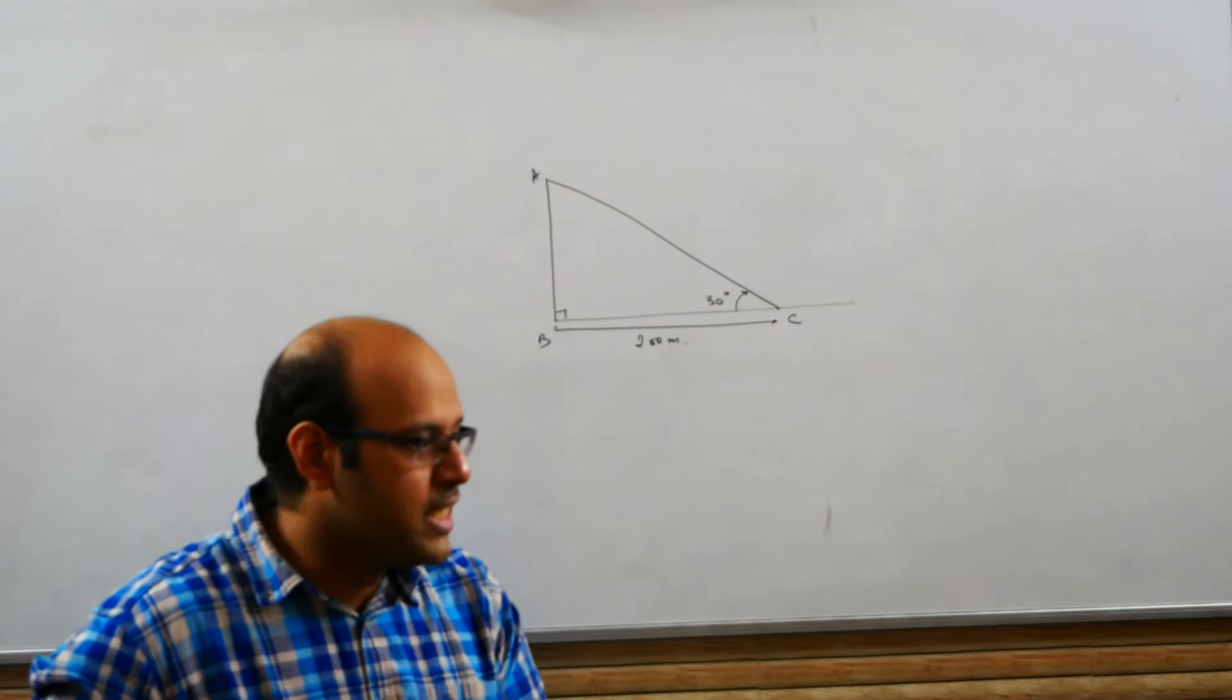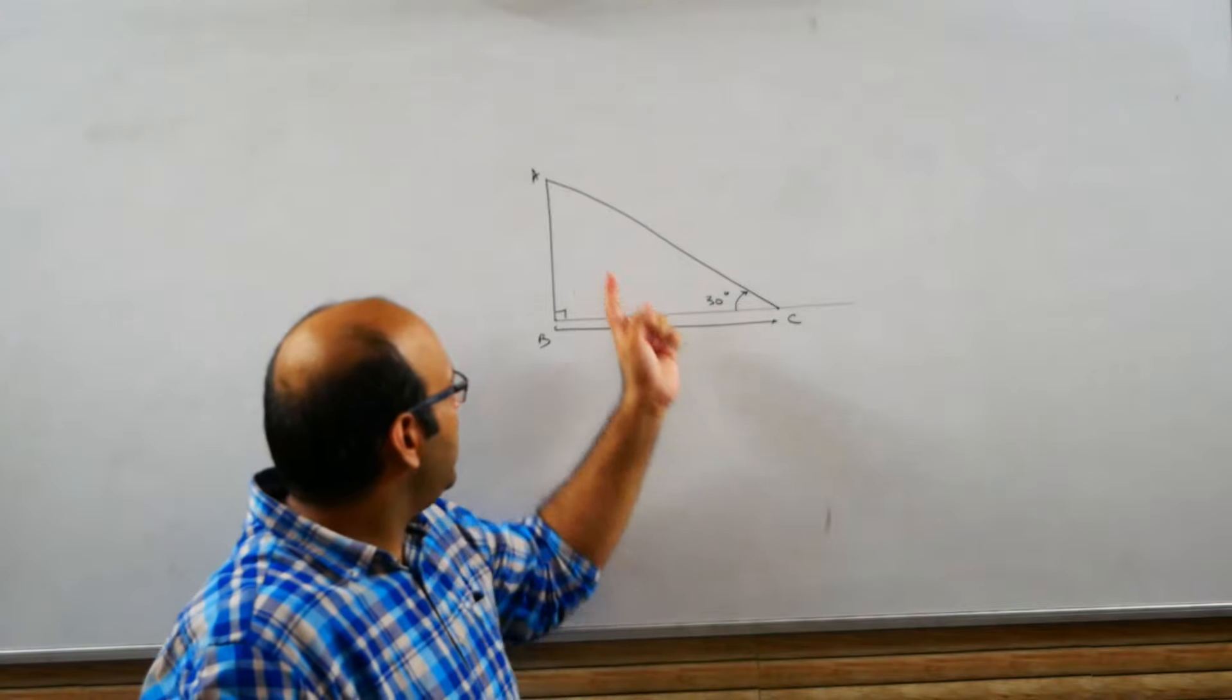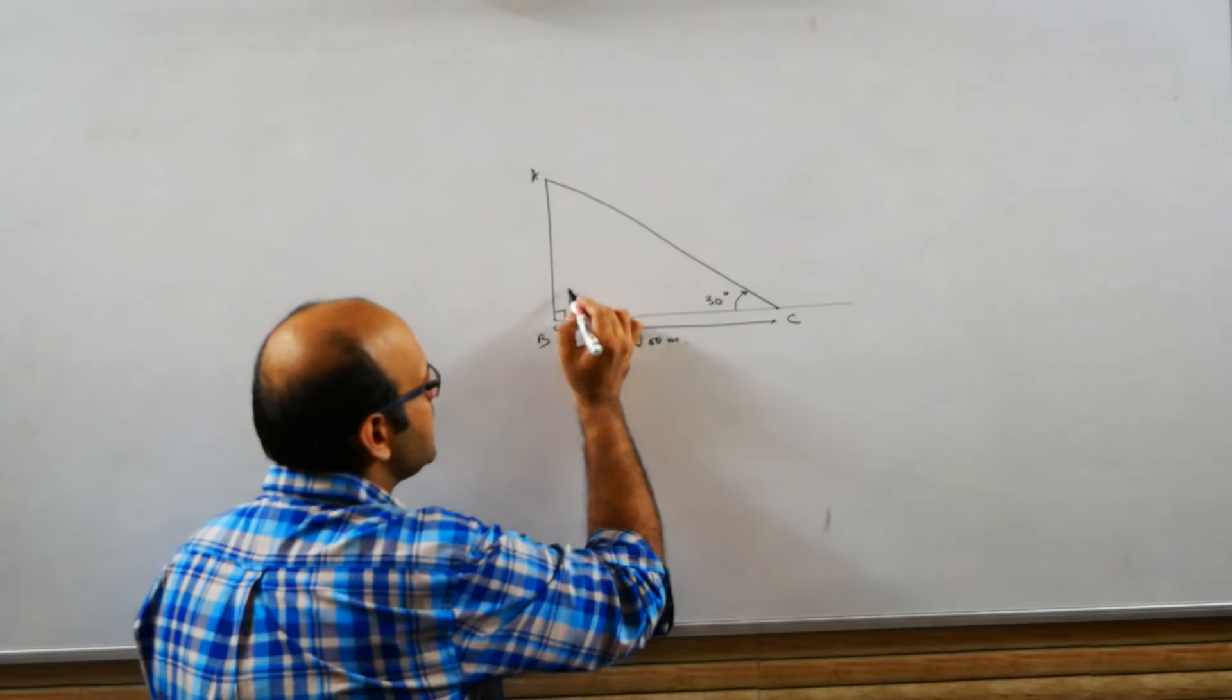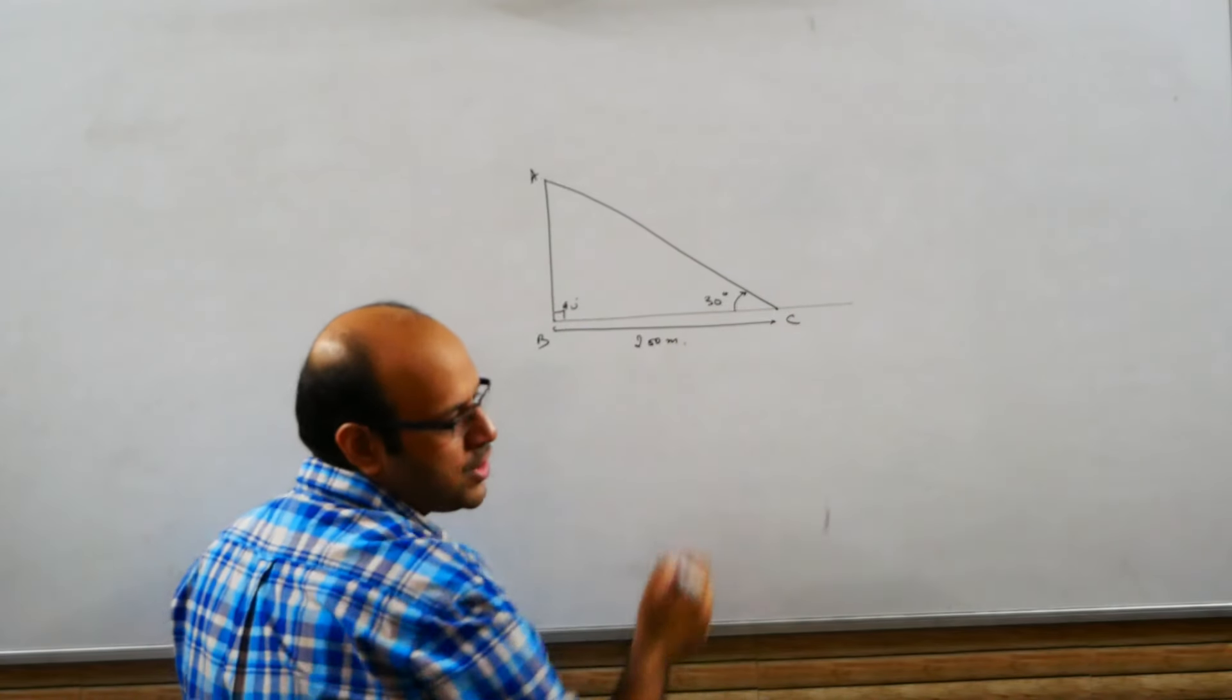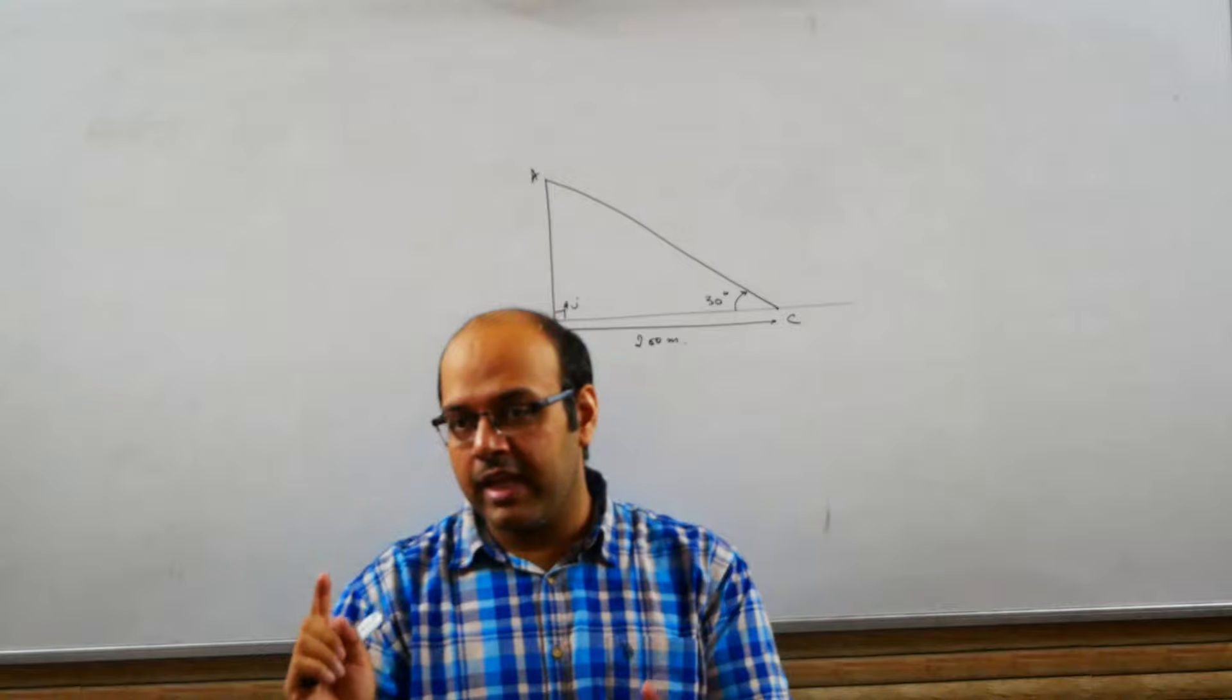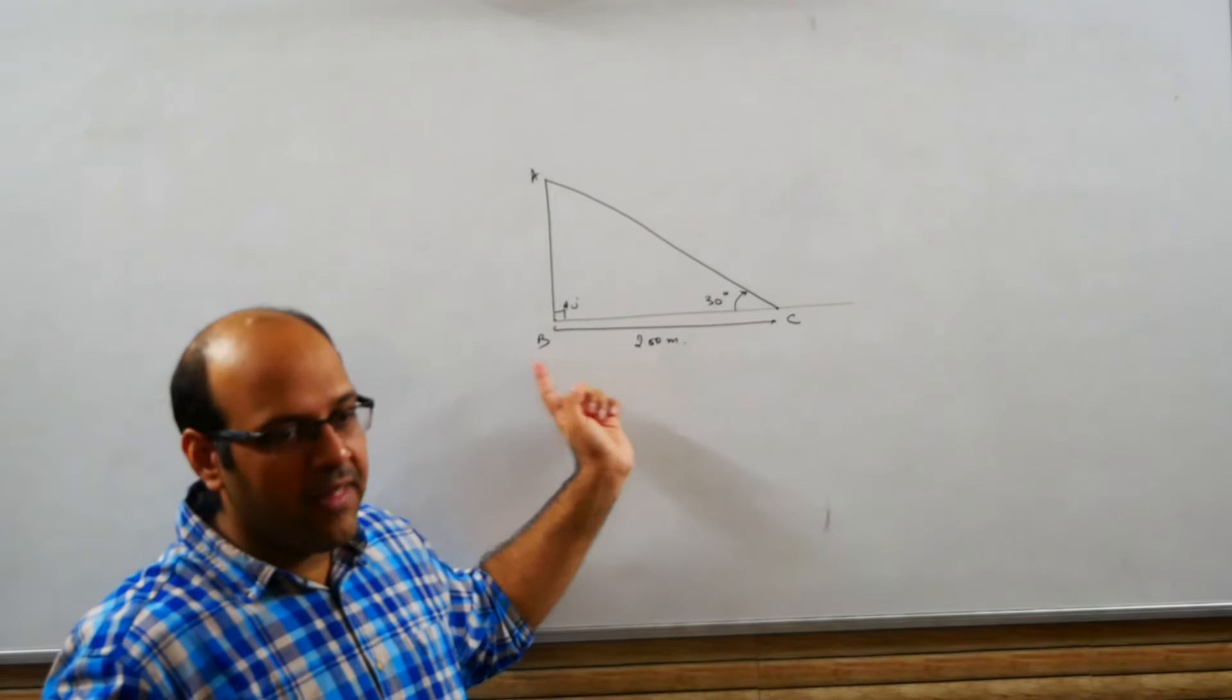Right. Now what should be your protocol? What should be your process? You should see, right angle triangle is formed here. This angle is 90 degrees, angle of elevation is 30 degrees given, and a side of the triangle's length is also given, BC's length.